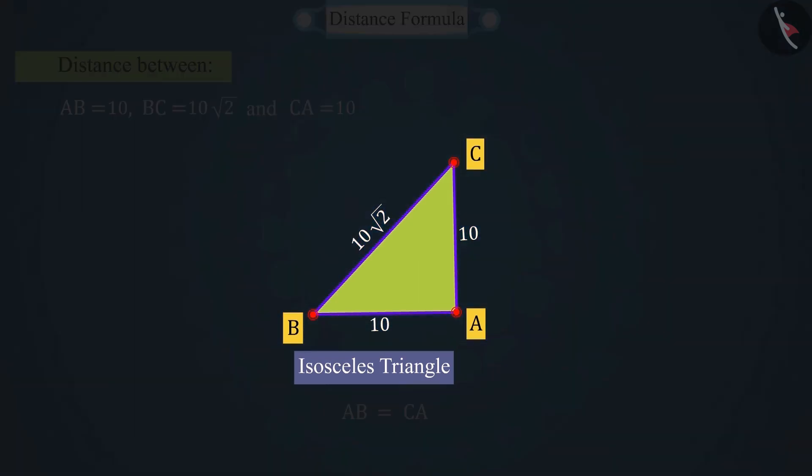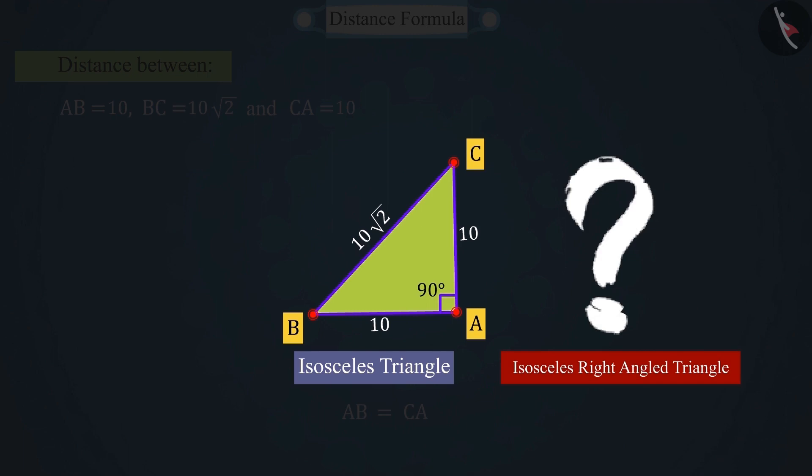But we have to check for an isosceles right-angled triangle. Can you tell how we can check if it is an isosceles right-angled triangle?